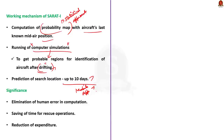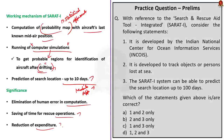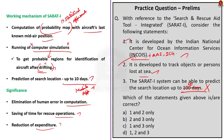The significance of SARATH-I: it eliminates human error in computation of probabilities, helps save time for rescue operations, and reduces expenditure required. Now the question: Statement 1 — it is developed by INCOIS — correct; SARATH-I is developed by INCOIS in collaboration with Airports Authority of India and the Indian Coast Guard. Statement 2 — it is developed to track objects or persons lost at sea — correct. Statement 3 — SARATH-I can predict the search location up to 100 days — incorrect; it can only predict up to 10 days, not 100 days. The correct answer is option A, 1 and 2 only.